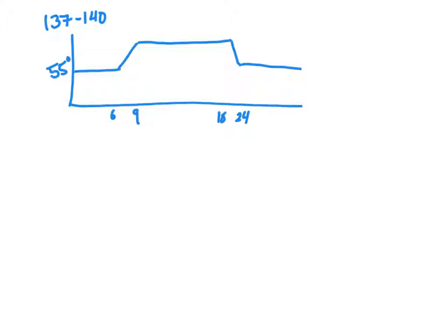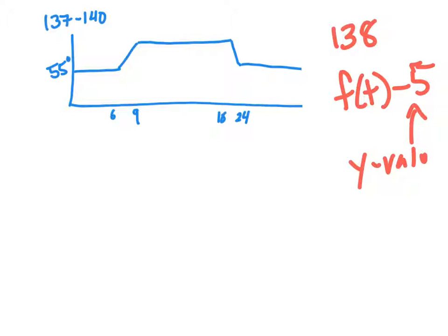137 to 140 ask about a thermostat. I'm just going to talk about 138 which asks if you wanted to keep the house 5 degrees colder would you then do f of t minus 5? We know that the y values would be down 5 for this. Since the y values are in degrees this would indeed be 5 degrees cooler. My graph would look something like this where it's 5 below the original graph.